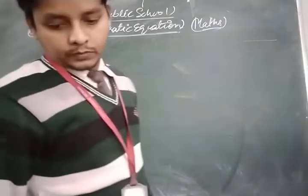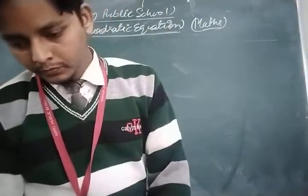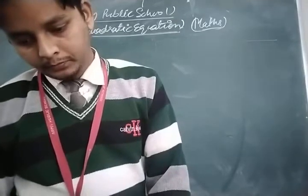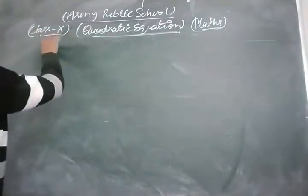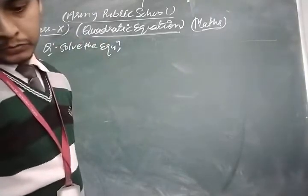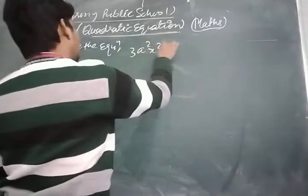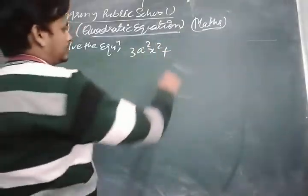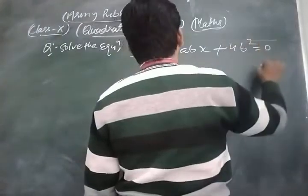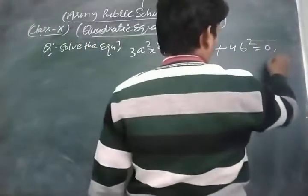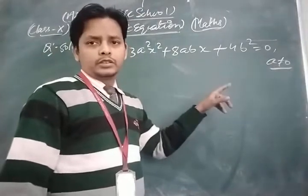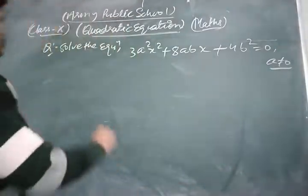Now we solve another important question. Solve the equation 3a²x² + 8abx + 4b² = 0 by using the formula, where a ≠ 0. This equation is in variable form, so first we find the capital values of A, B, and C.